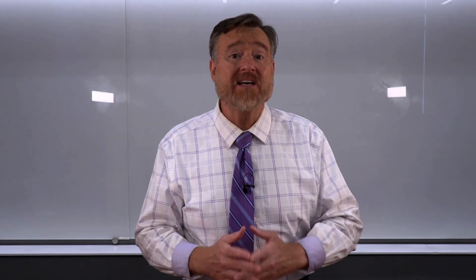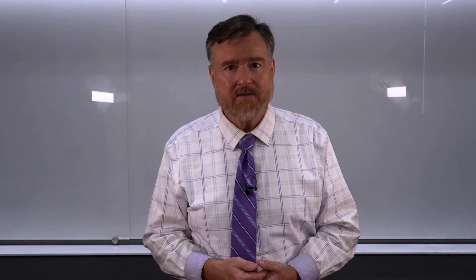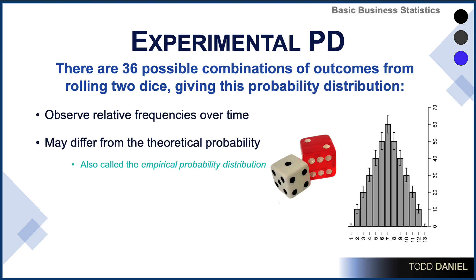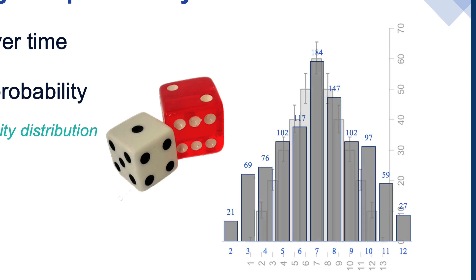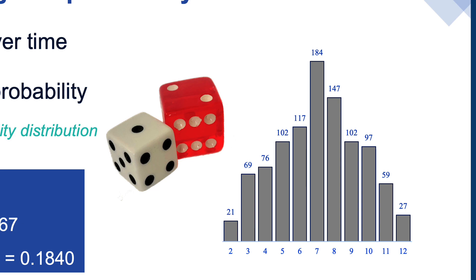That's the theoretical probability distribution, but that's not how it works in real life. In real life, it'll always be slightly different — that is our experimental probability distribution. What we do is roll a pair of dice 1,000 times and keep track of the outcomes that actually occur, observing the relative frequencies over time. Instead of the beautiful theoretical distribution, we get something that looks more like this. The number seven, although more frequently occurring, only happens 184 times, which is different than what we would expect.